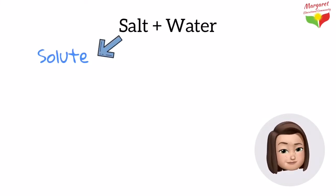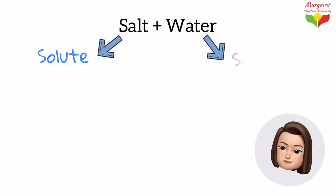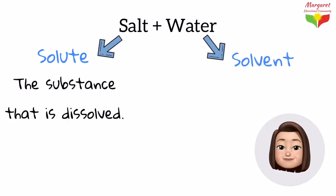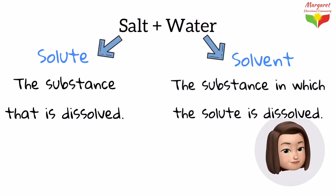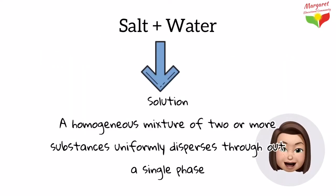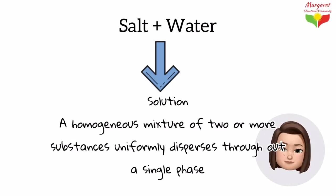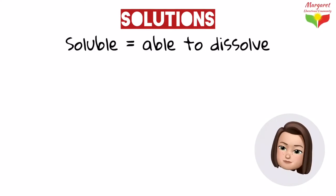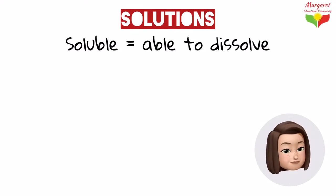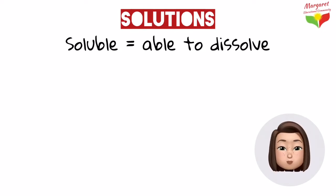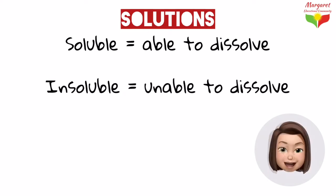In the mixture of salt and water, the salt is the solute and the water is called the solvent. The solute is the substance that is dissolved, and the solvent is the substance in which the solute is dissolved. A solution is a homogeneous mixture, meaning the particles of two or more substances are uniformly dispersed throughout a single phase. If a substance is able to dissolve in the solvent, it's called soluble; if not, it's called insoluble.